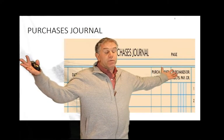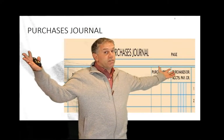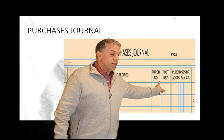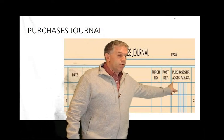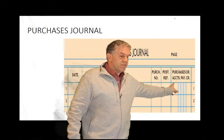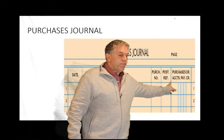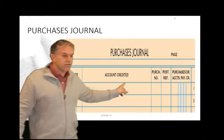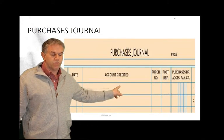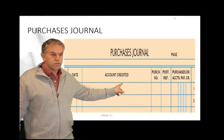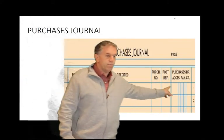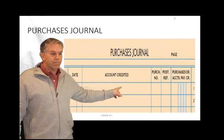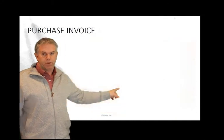The beautiful thing about the purchases journal is our debits are always going to equal our credits. The accounts payable — whoever we bought our merchandise from on account — that company name is what goes into the accounts credited column.